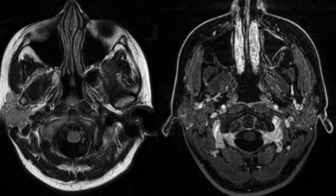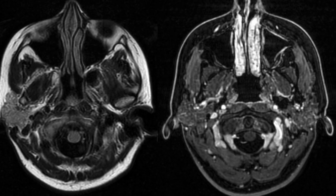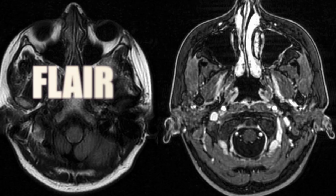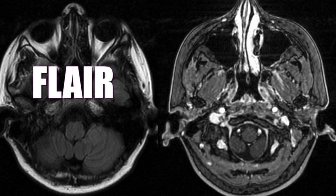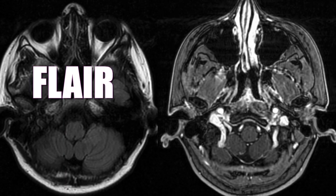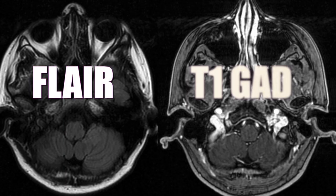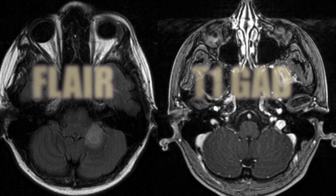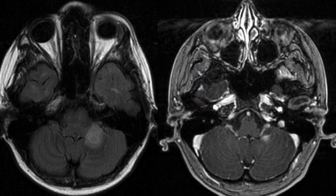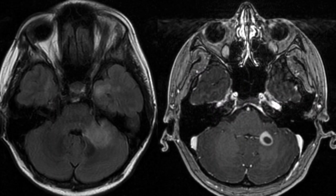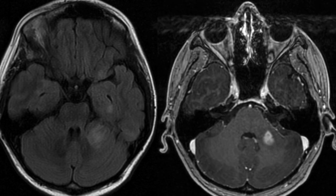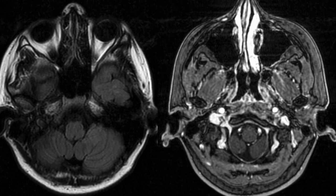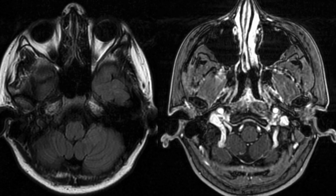Here you see two different sequences of the same brain. On the left hand side is a water-based image called a FLAIR-weighted image, and on the right hand side is after the administration of the contrast dye. In both cases the person is laying flat on their back looking up at the ceiling. You see the nose at the top of the page.